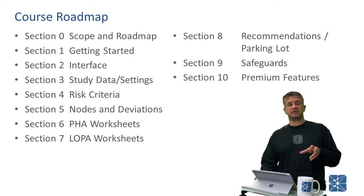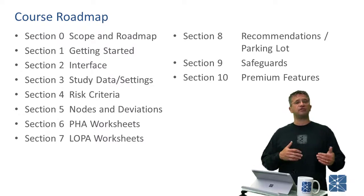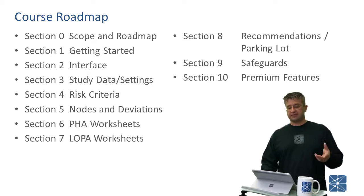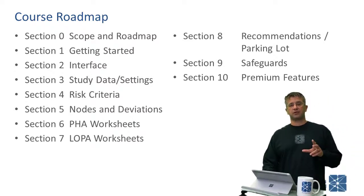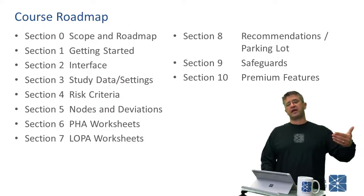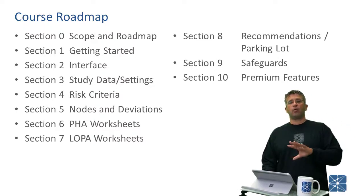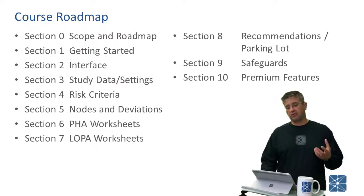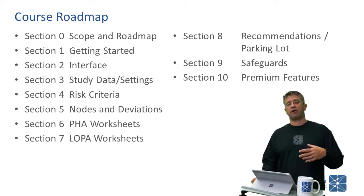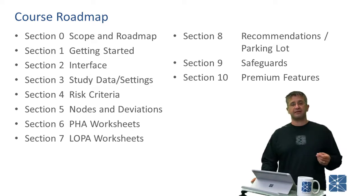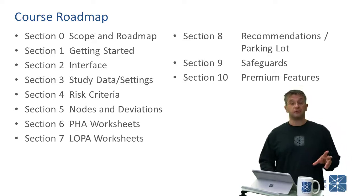In section four, we'll talk about setting up the risk tolerance criteria — how to modify them and use different varieties. In section five, we'll talk about nodes and deviations. Section six is dedicated to HAZOP or PHA worksheets, while section seven discusses LOPA worksheets. We'll discuss how data is carried from one worksheet to another without having to change the underlying data structure, as all of these things are closely tied together. Section eight discusses recommendations and use of the parking lot. Section nine talks about safeguards and how they are documented in the database. And finally, section ten is where we talk about all of those premium features.